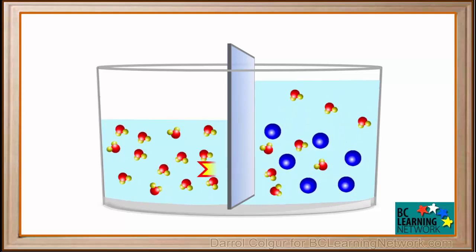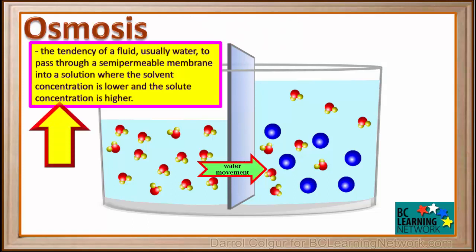Stopping the animation, we see that water has diffused through the barrier, from an area of pure water to an area where a solute, sugar in this case, is dissolved in the water. This process is called osmosis. Osmosis can be defined as the tendency of a solvent, usually water, to pass through a semi-permeable membrane into a solution where the solvent concentration is lower and the solute concentration is higher.